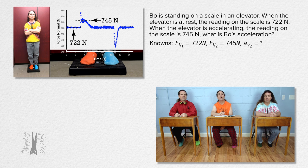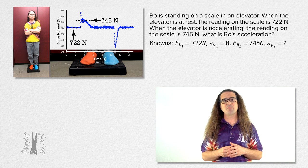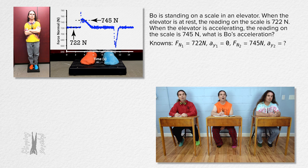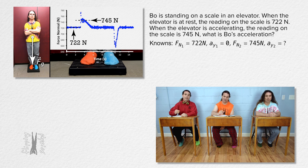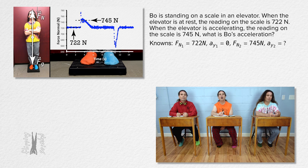I think you forgot the acceleration in the y-direction for part one. Oh, right — it says the elevator is at rest, so the acceleration in the y-direction for part one is zero. Bo, please begin by drawing the free body diagram. The force of gravity is straight down and the force normal is straight up. And that is actually for both parts one and two because the free body diagram does not change — only the magnitude of the force normal changes.